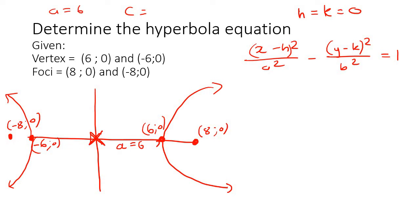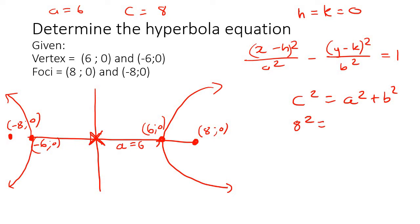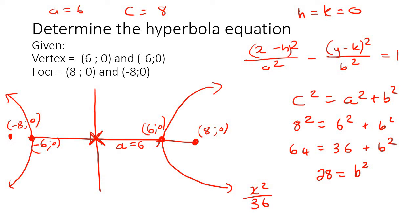C is the length from the center to one of the foci, so c equals 8. We then use the foci equation: c squared equals a squared plus b squared. So 8 squared equals 6 squared plus b squared, giving us 64 equals 36 plus b squared, so b squared equals 28. Now we have everything: x squared over 36 minus y squared over 28 equals 1.